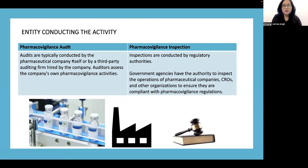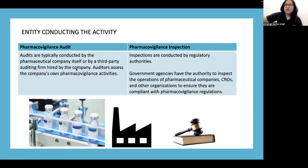Audits are conducted by the pharmaceutical company itself or by a third-party audit firm hired by the company. Auditors assess the company's own pharmacovigilance activities. Inspections, on the other hand, are conducted by regulatory authorities. Government agencies have the authority to inspect the operations of pharmaceutical companies, CROs, and other organizations to ensure they are compliant with pharmacovigilance regulations.